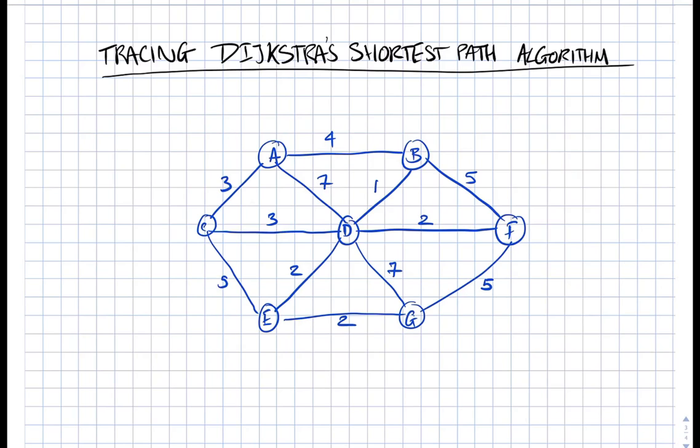Okay, so here we are with Dijkstra's shortest path algorithm and we're going to look at how we trace it as we need to for the A-level computer science. We've got our graph in front of us here that we're going to be finding the path for, and we're going to be moving from A through to G and we want to find the shortest path to do that.